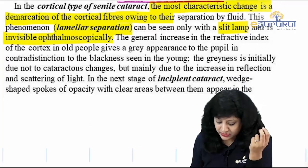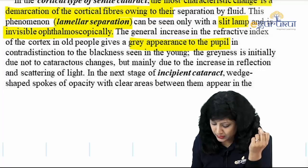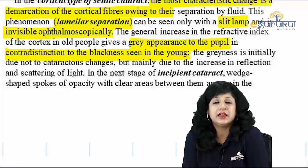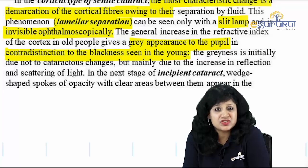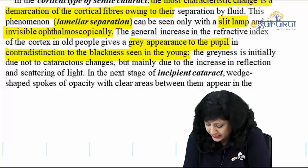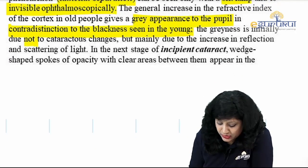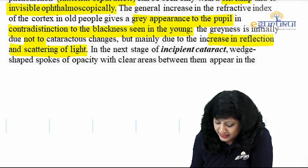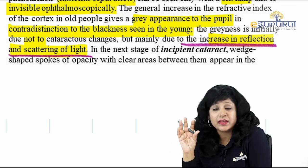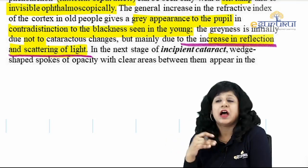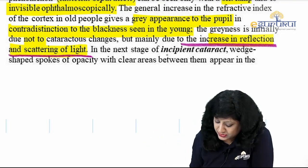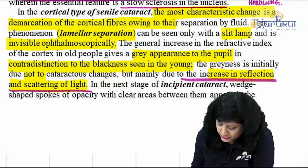The general increase in the refractive index of the cortex gives a grayish appearance to the pupil, in contrast to the blackness in young individuals. Initially, this grayishness is not due to cataractous changes but due to increased reflection and scattering of light. Only later is it due to the whitish cataractous opacity itself. The next stage is incipient cataract, where you can identify the actual type.